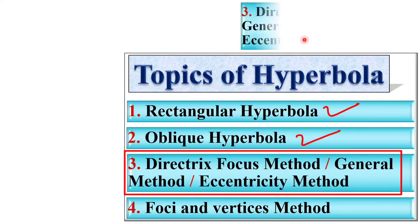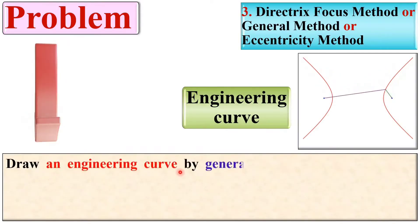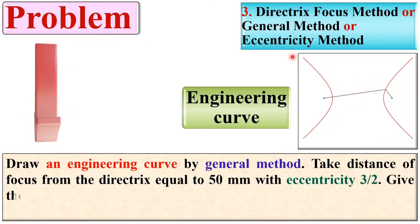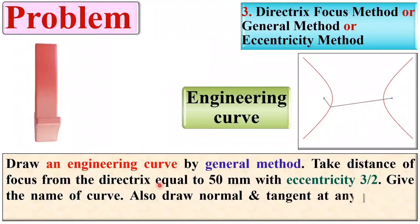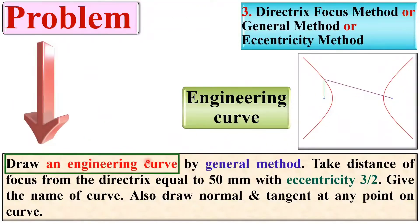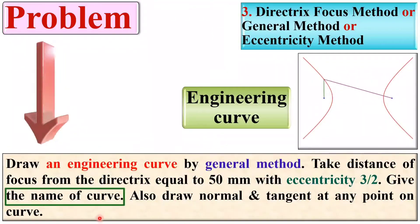Let's start with the directrix-focus method. See the description of the given problem: draw an engineering curve by the general method — that means the directrix-focus method. The distance of the focus from the directrix is equal to 50 mm with eccentricity 3 by 2. Give the name of the curve and also draw the normal and tangent at any point on the curve. There are basically three different objectives: first, draw the engineering curve; second, give the name of the curve; and third, draw the normal and tangent.